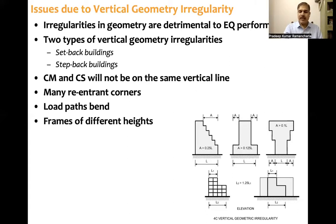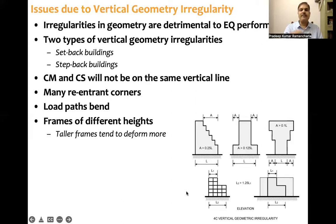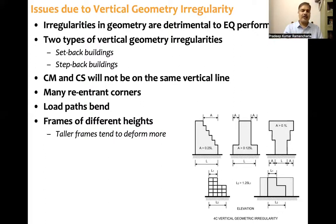Also, looking at the frames: the right-side frame may be a three-story frame, while suddenly another is a five-story frame — frames of different heights. In that case, taller frames tend to deform more because of their flexibility. Additionally, taller frames are subjected to more forces due to the greater mass present in them. These are some of the detrimental effects when vertical geometry irregularity is present in the structure.